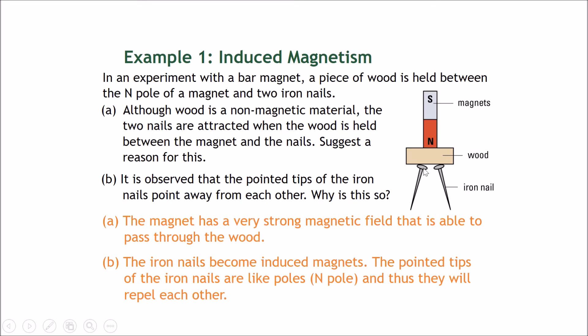So if this part of the nail is a south pole, it would make the other side of the nail a north pole. Similarly, if this side of the nail is a south pole, it will make the other side of the nail a north pole.